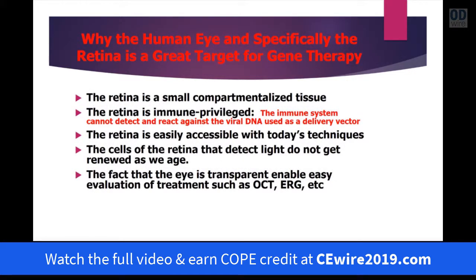One reason we're talking about this in terms of the human eye is that the eye is specifically a great target for gene therapy. First of all, the retina is a very small area — the areas you have to treat, whether for macular degeneration or areas around the nerve, are small compared to other problems in the body, like the heart, liver, or lung. Also, the retina, being part of the brain, is immunoprivileged. The immune system cannot detect and react against the viruses used as a delivery method, so it's a much safer place to deliver gene therapy.